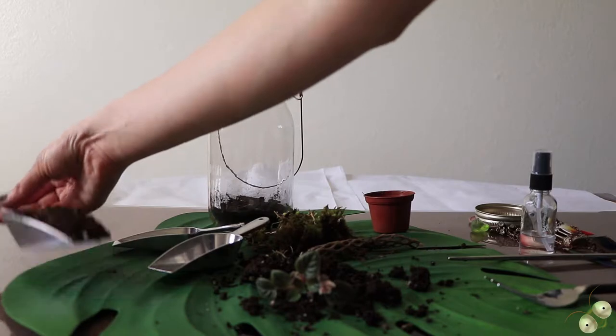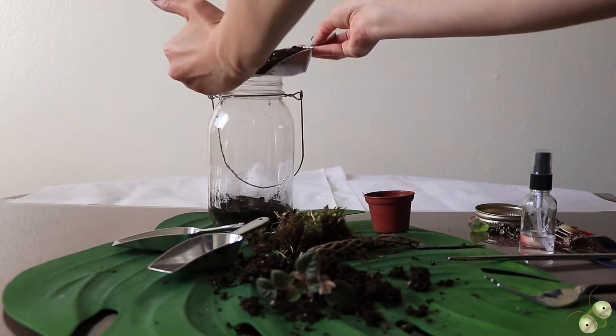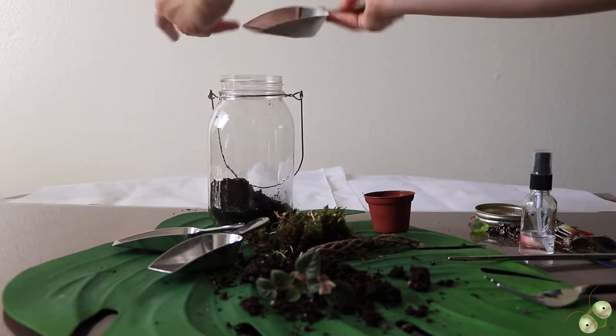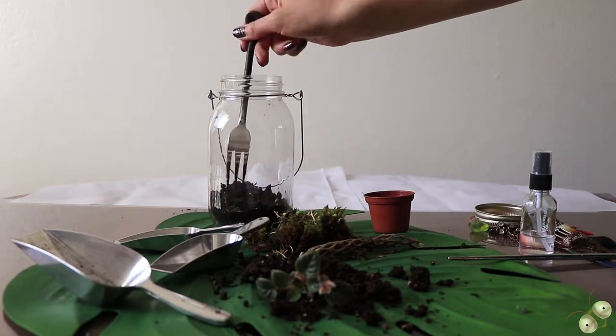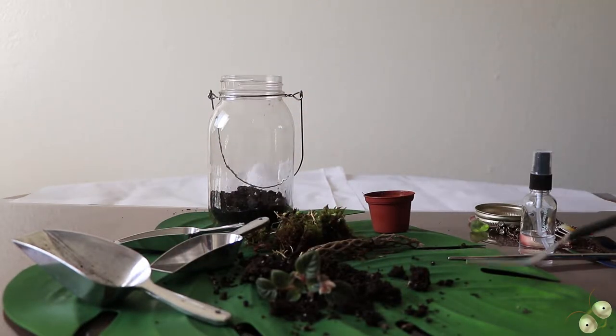I'm going to be adding this, which is actually organic potting soil with worm castings. And you're going to be seeing me use kitchen utensils throughout this video because they're fairly easy to use with terrarium projects.